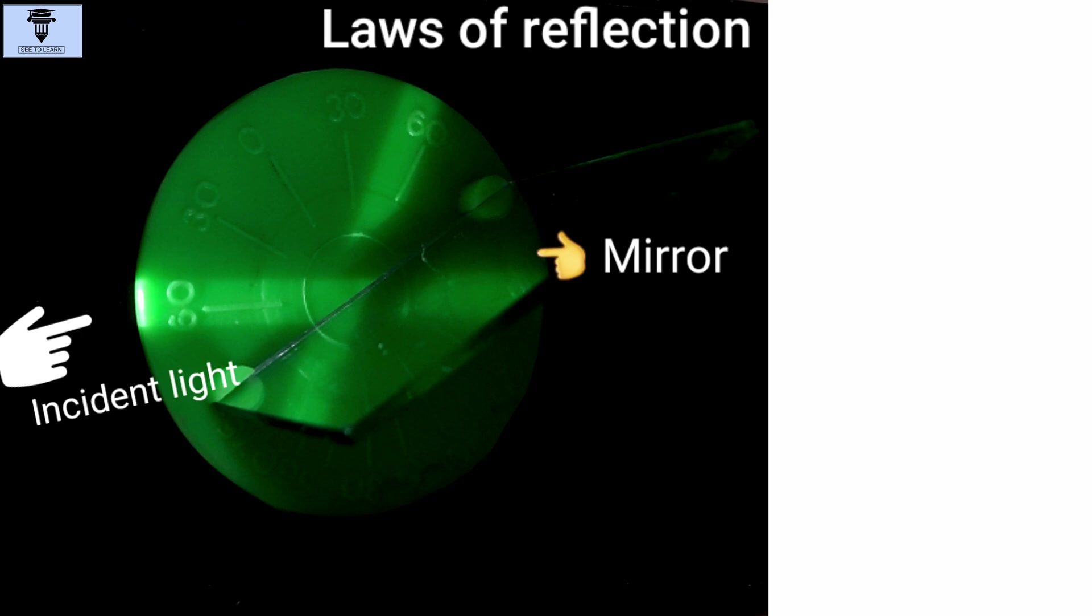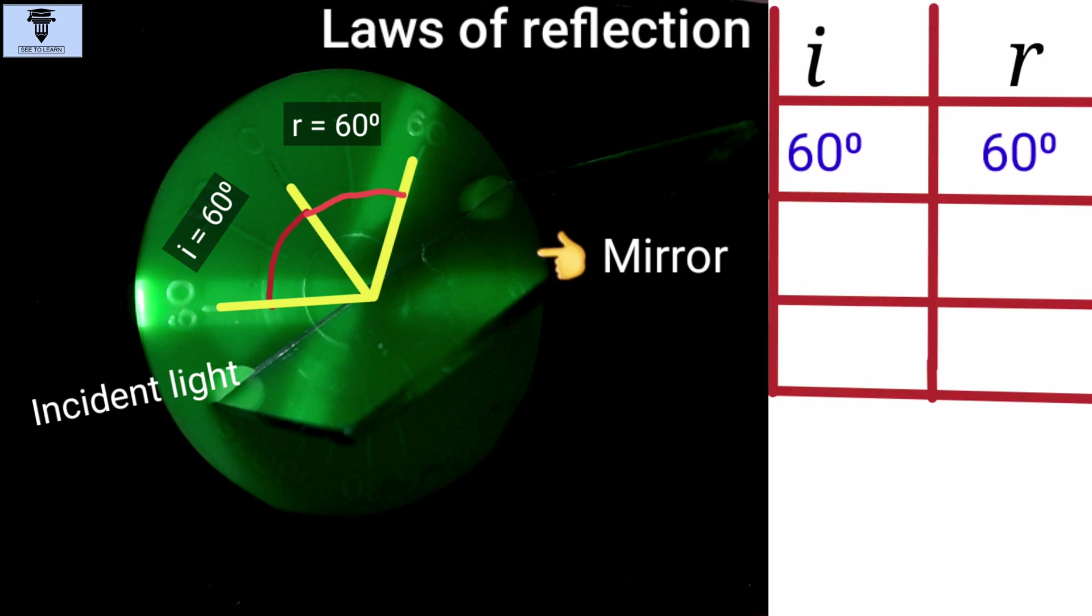Here, you can see the digit below the incident light is 60 degrees. This line drawn on the marking 0 is the normal. So, the angle of incidence is 60 degrees, right? And we can see that the digit below the reflected light is also 60 degrees. In other words, the angle of reflection is also 60 degrees. Let's note down these two values of incident and reflected angles.